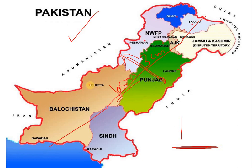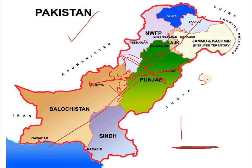Suppose someone is interested to find the direct distance between Lahore and Quetta. On the sheet of paper the distance is, for example, 5 cm. Now, in reality, how much will be the actual distance? We can say that this 5 cm is representing how much actual distance — that is a question.